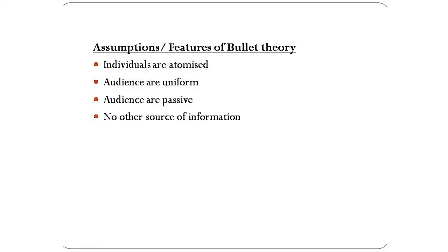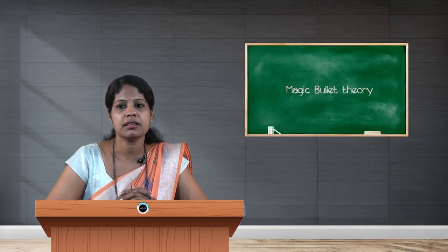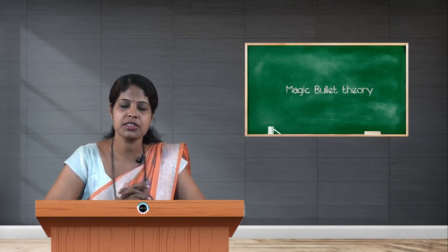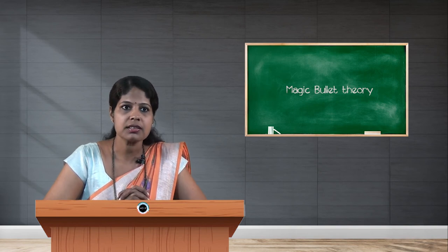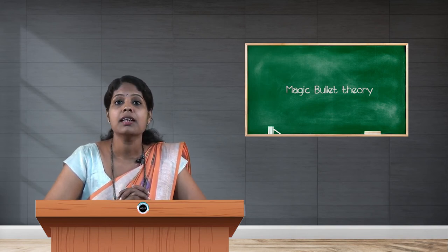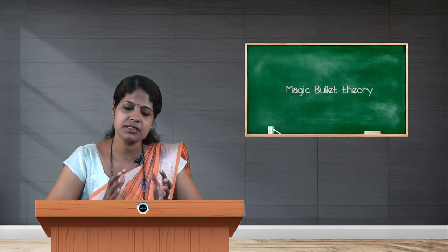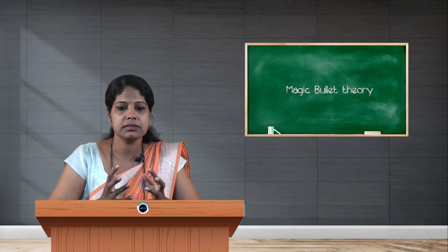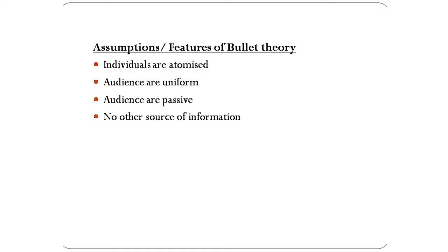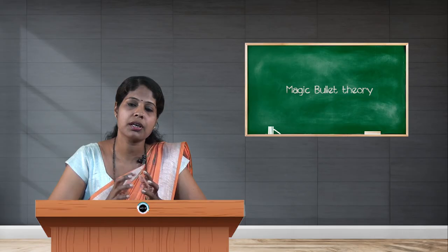The second assumption is that audiences are uniform. According to this theory, audiences receive the same message from the same media, and similar attitudes and beliefs can be created by media messages. The third assumption is that audiences are passive. According to this theory, people are not rational, they don't think, they just receive whatever media dumps in front of them unquestioningly. The fourth assumption is there is no other source of information. According to this theory, there are no other alternative media to compare media texts.